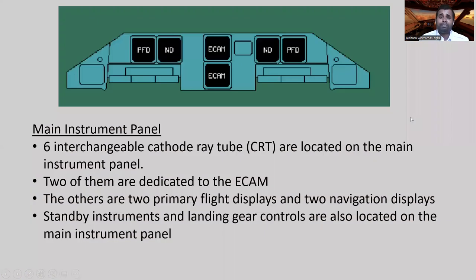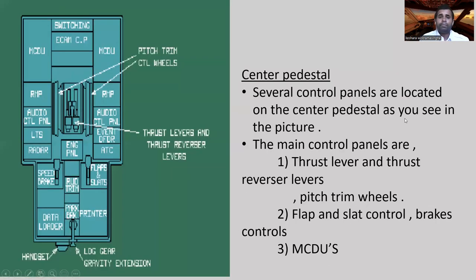The main instrument panel has six interchangeable cathode ray tubes. Two of them are dedicated to ECAM, two are primary flight displays, and two are navigation displays — one set for the captain and one for the first officer. Standby instruments and landing gear controls are also located on the main instrument panel.